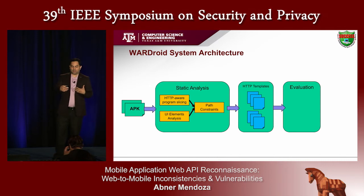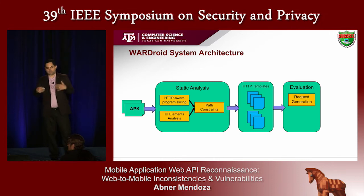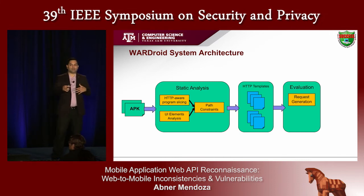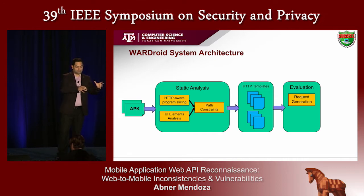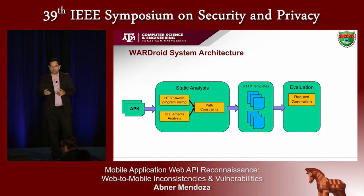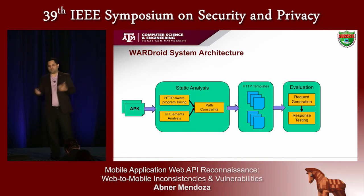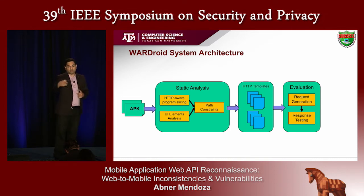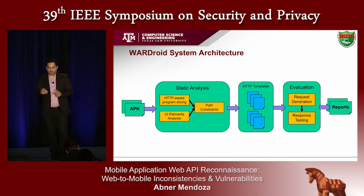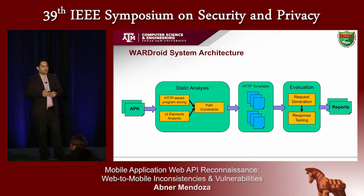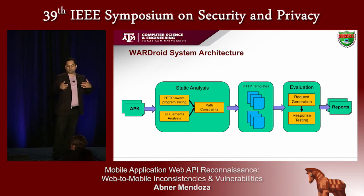We feed these templates into the evaluation module, which takes the templates and generates requests — both valid and potentially invalid from the perspective of the constraints observed in the app. We then do testing on the responses, testing the server in a black-box fashion to determine whether requests sent with potentially invalid parameters were accepted or not. The output is reports of different apps and what look like potential vulnerable API endpoints, which we can then manually verify and validate.